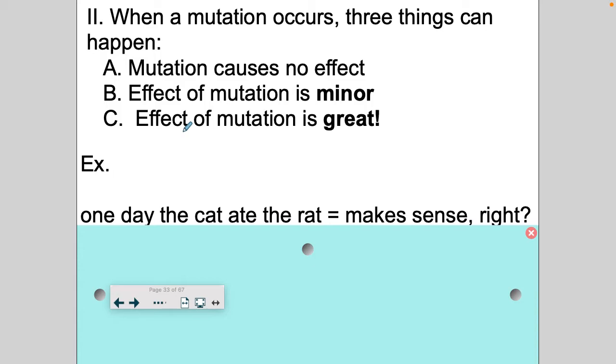To give you an idea of what I mean by how can a mutation affect a protein, read the sentence here. One day the cat ate the rat. Notice how I have each word as three letters. I was trying to go for codons in the DNA sequence. Imagine your DNA sequence, every three letters is a codon for an amino acid for that protein, and that protein is supposed to work. It makes sense to the cell.